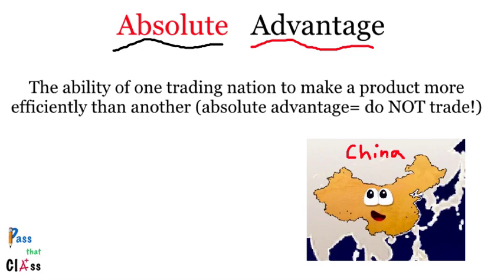Absolute advantage basically says that if a country can make something more efficiently than other countries, then it should not trade with those less efficient countries. A good example of absolute advantage is what China's trying to do — they're trying to have an absolute advantage over all products, from simple home appliances to even cars now.